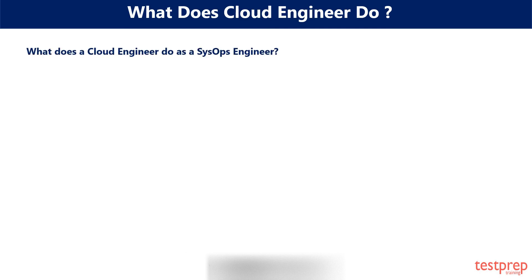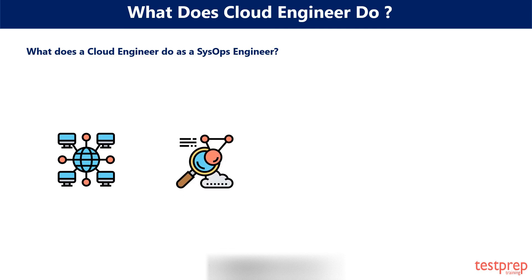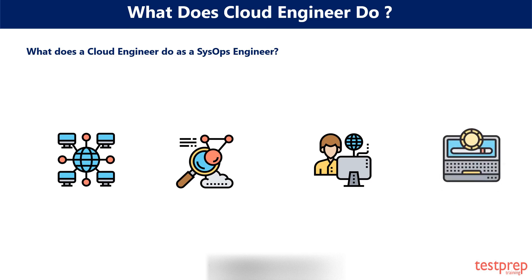What does a cloud engineer do as a SysOps engineer? System operation engineers are system administrators that undertake the responsibilities after the application has been designed and developed. They maintain the development process by the management and regulation over the applications. They require experience in system administration in a system operation role. It is imperative for them to be adept at working with virtual platforms. They need skills in auditing and monitoring. They are also responsible to translate architectural requirements.